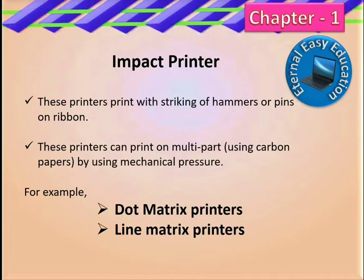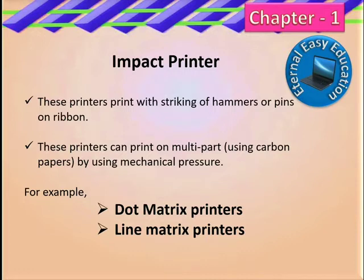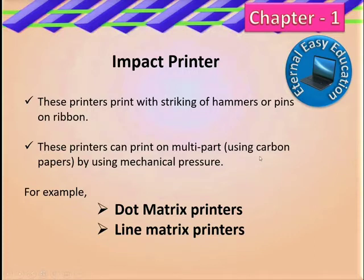This is the impact printer. When we print on paper, the working mechanism involves the striking of hammers or pins. In a typewriting machine, there are pins that strike a ribbon. There is a pin and a ribbon — you press a key and the ribbon is struck. There is a lot of noise. These printers can print on multi-part forms by using mechanical pressure, using carbon papers. So if you need 2-3 copies, you can use carbon papers.